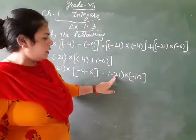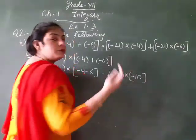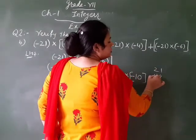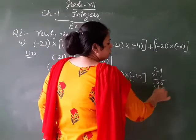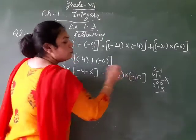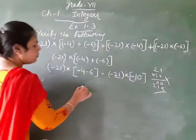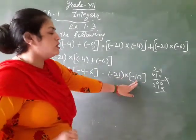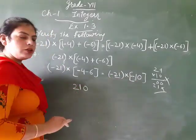In multiplication, now we have 21 into 10. When there is 0 at the last, no need to multiply like this. You just multiply 21 into 1, and since there's 0 at the last, in the answer you apply 0 at the last. 21 times 1 is 21, add the 0 at the end.